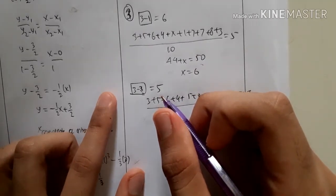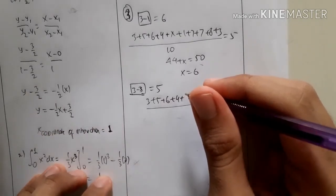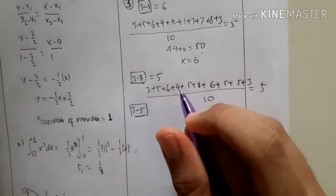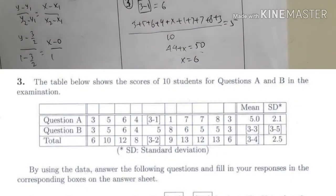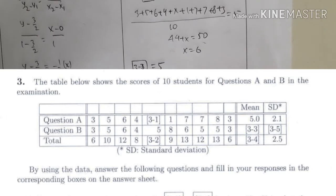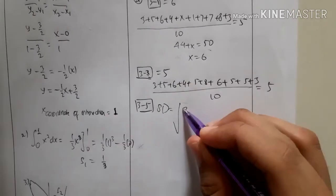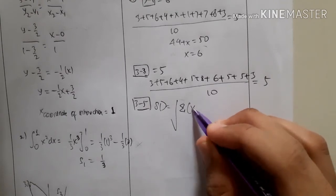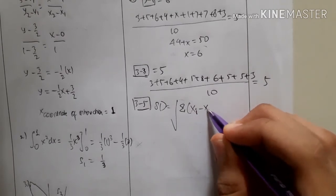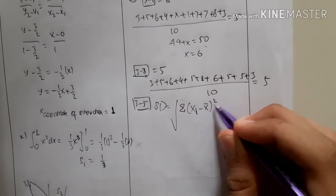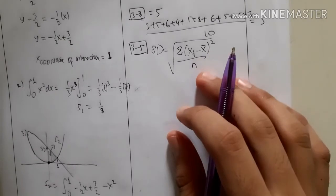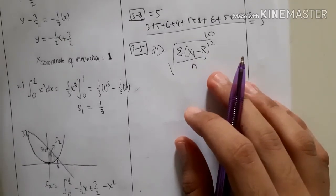Now let's go to Box 3-5, which is the standard deviation. Remember the formula: the square root of the summation of (xi minus the mean) squared, divided by n. I'll use Box 3-5 as the example to show how to use this formula.